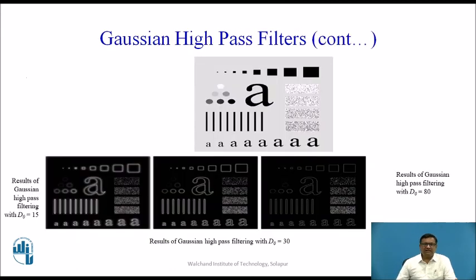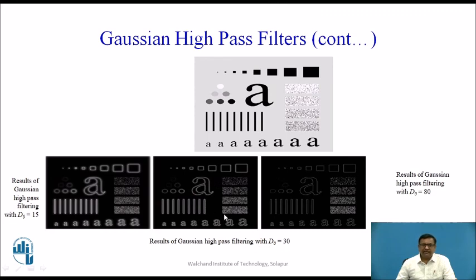The Gaussian High Pass Filter is represented in three ways: image, 3D, and coordinate system. The result of filtering with the Gaussian High Pass Filter shows: with radius 15 we do not see much enhancement, but with radius 30 there is more enhancement. Radius 30 appears to be the more appropriate radius for getting an enhanced image.